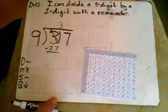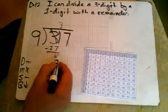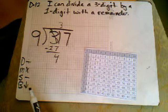So 11 minus 7: 7, 8, 9, 10, 11. So we would have 4 left over. 2 from 2 is 0, so I'm going to leave that.